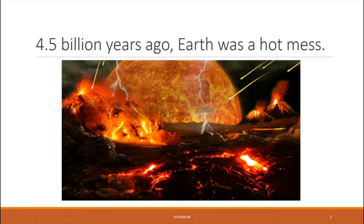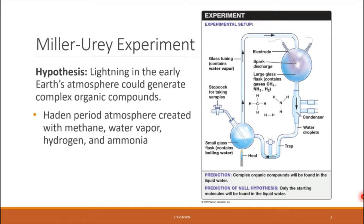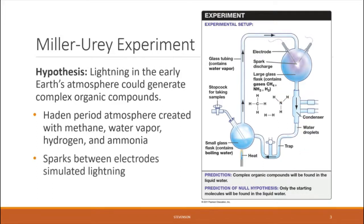The landmark experiment that provided this evidence came in the 1950s and was carried out by Stanley Miller and Harold Urey. What they hypothesized was that lightning in the early atmosphere of the Earth during the Hadean Period could have catalyzed chemical reactions that would have generated complex organic molecules, which are the sorts of compounds that make up living organisms. They simulated the Hadean Period conditions by creating a closed-loop system of tubes containing gases present at that time — methane, water vapor, hydrogen gas, and ammonia — and simulated lightning with a spark.